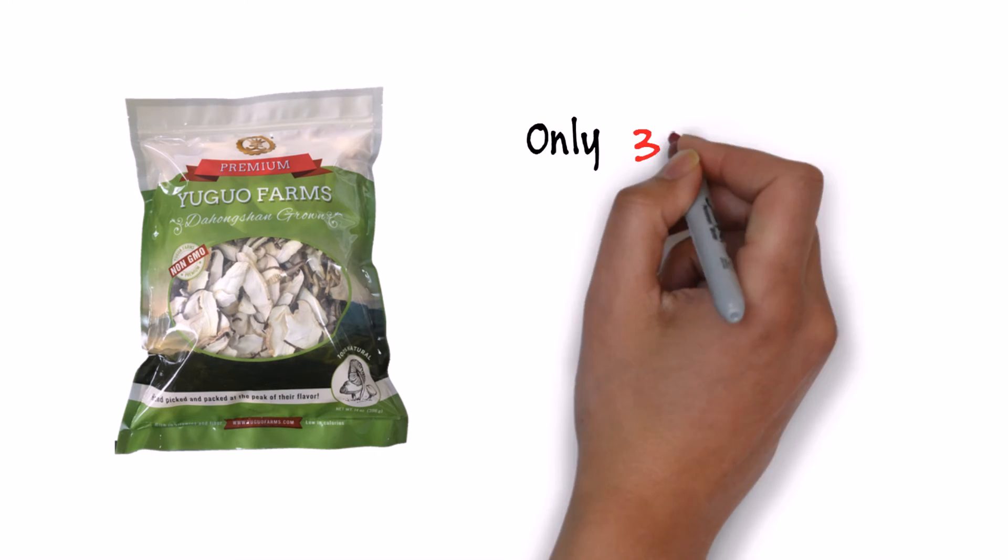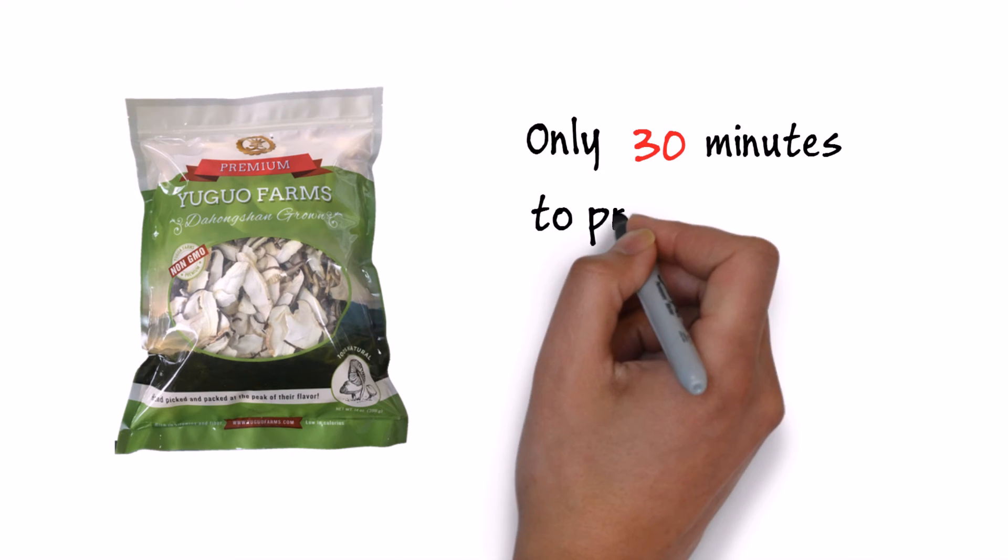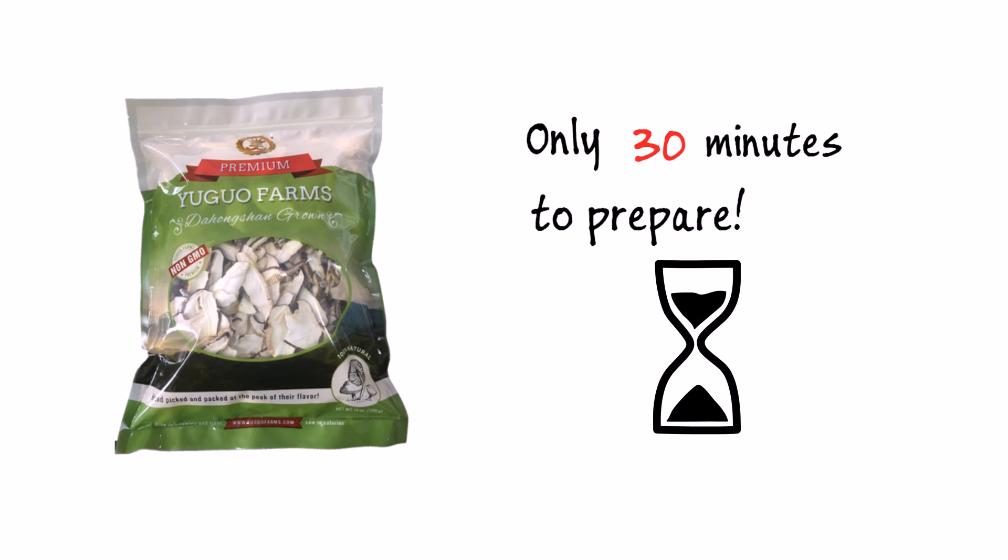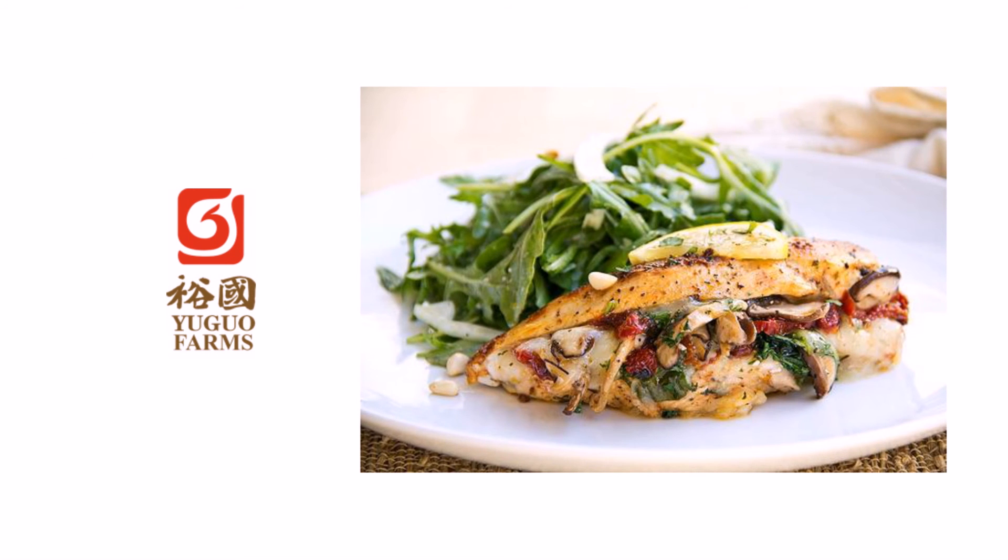Yuguo Farms dried sliced shiitake mushrooms are easily prepared within 30 minutes, compared to other dried shiitake mushrooms that take 3 to 6 hours to prepare. Add shiitake mushrooms to your favorite dish and enjoy!